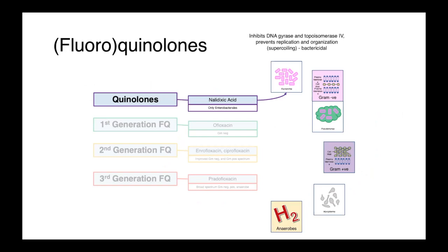Looking at the spectrum of activity of drugs within this family, we start with our quinolones — things like nalidixic acid. These have a very narrow spectrum of activity, essentially only active against our Enterobacteriales, and more specifically our Enterobacteriaceae, so bacteria like E. coli. Nalidixic acid was also recognized to not achieve therapeutic concentrations in body sites outside of the bladder, so it was really only used for treating urinary tract infections and was quite limited in its clinical utility.